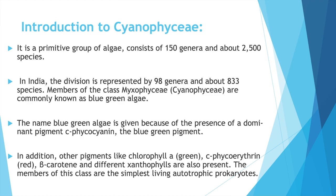Introduction to Cyanophyceae: It is a primitive group of algae which consists of 150 genera and about 2500 species. In India, the division is represented by 98 genera and 833 species. The class is also known as Myxophyceae or Cyanophyceae, and they are both known as blue-green algae.